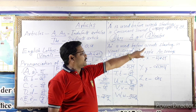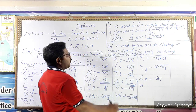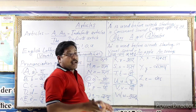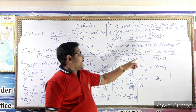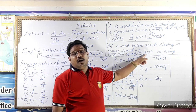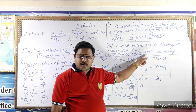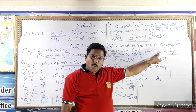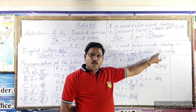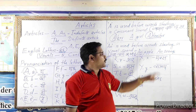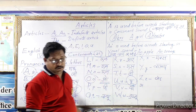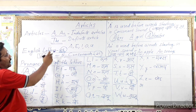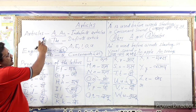An is used before words starting with a vowel sound. An apple — the A in apple is a vowel sound. An orange — O is the vowel sound, that is why we say 'an orange.'